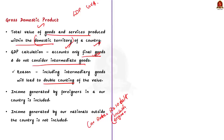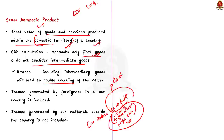When we include the value of intermediary goods in GDP calculation, the value is double counted while also including the final value of the car. So to avoid this double counting, GDP takes into account only the final value of goods and services produced. Also remember: in GDP calculation, income generated by foreigners in a country is included, but income generated by nationals outside the country's territory is not included.